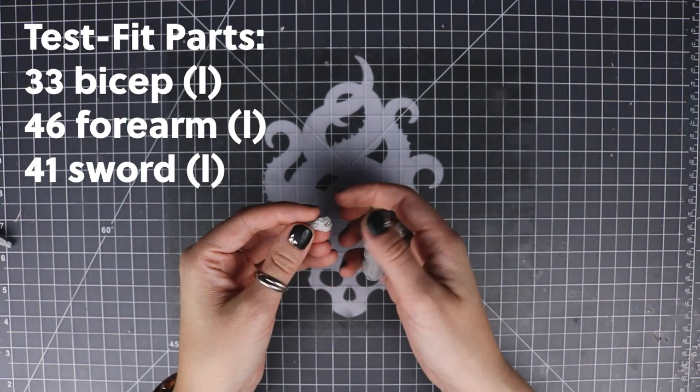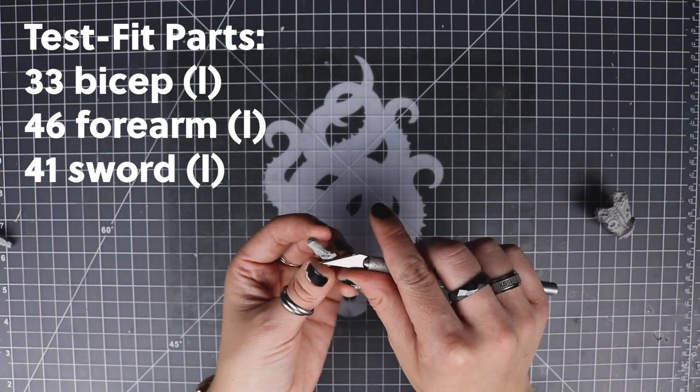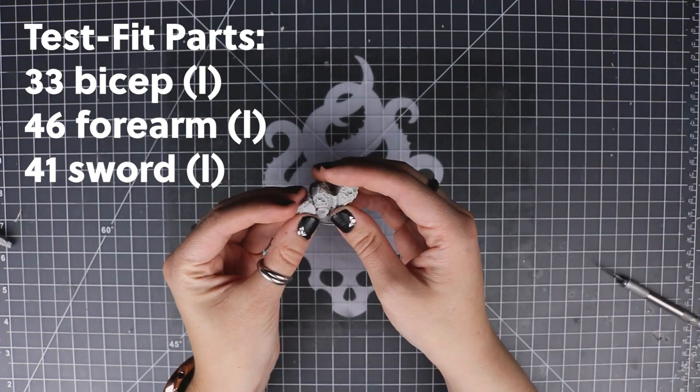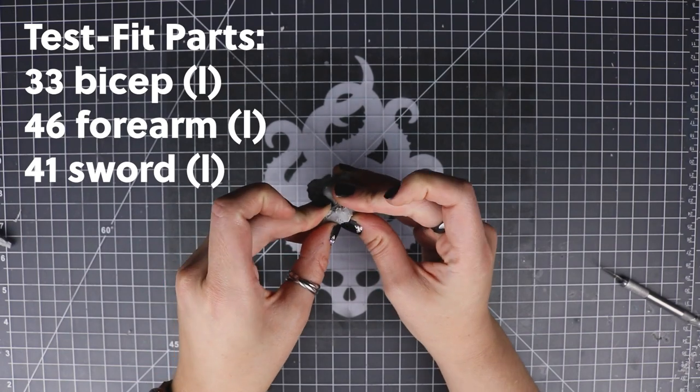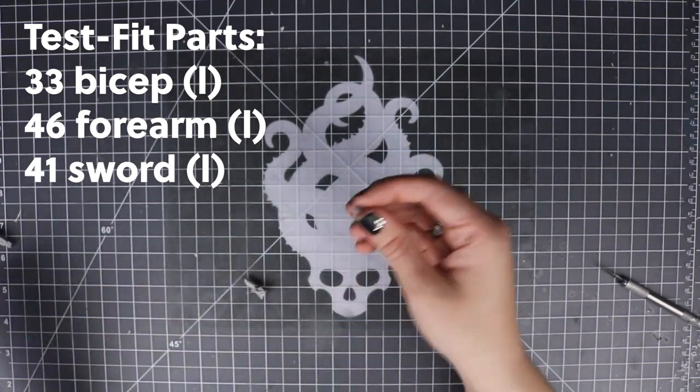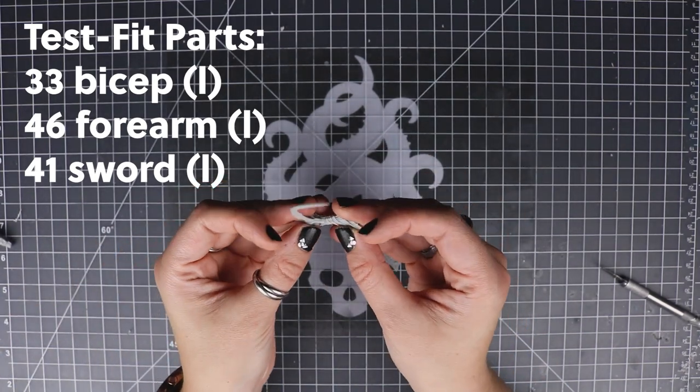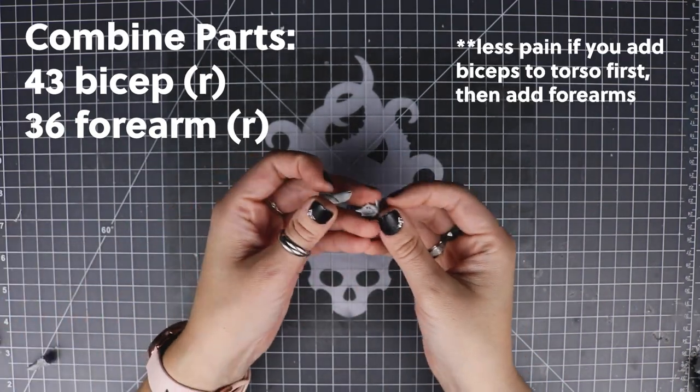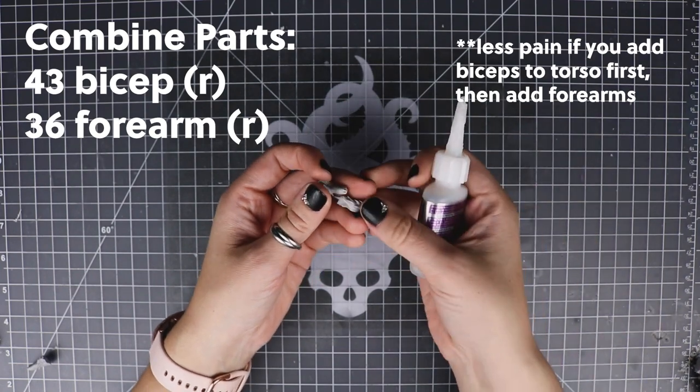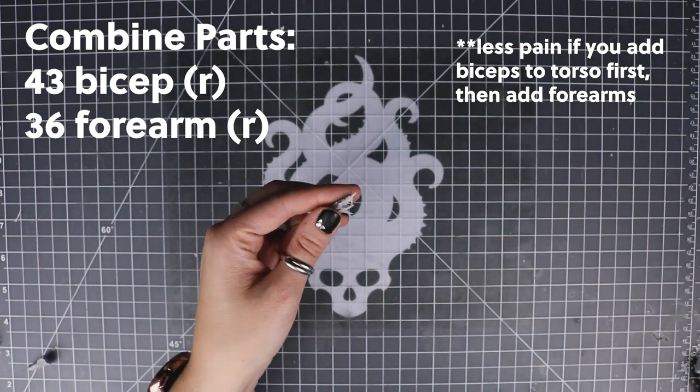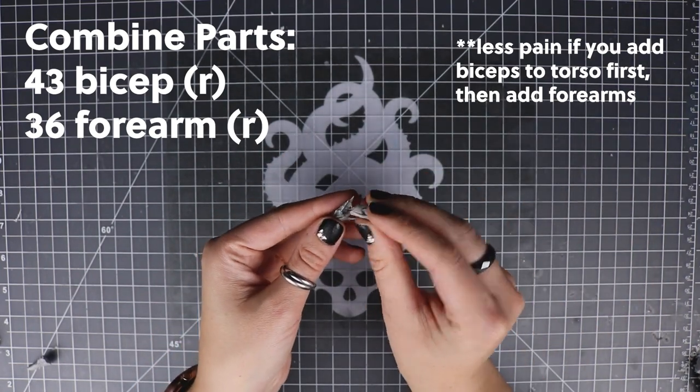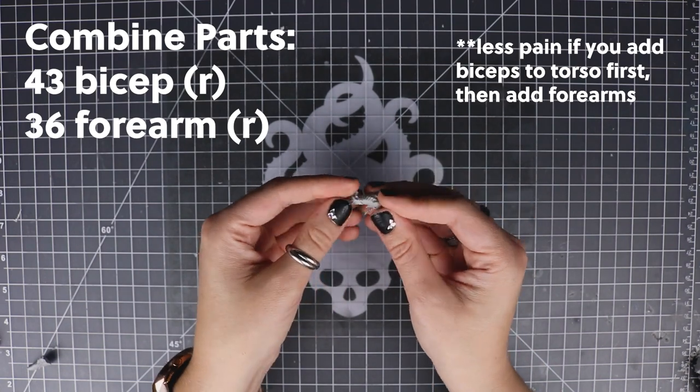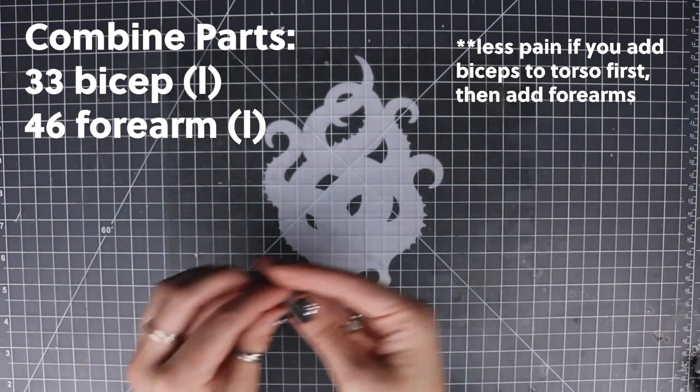This connection point needs to be cleaned really well to get that fit because that's where the sprue connects. Make sure that all of the excess material has been removed and test fit that piece like crazy because that also connects to the shoulder pads. So it's another tri-connection point that you need to be careful with. As I mentioned before, there will be less pain if you attach the bicep to the torso first before applying these forearms.